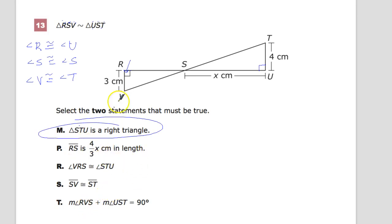Can we know that RS, so this distance here, is 4/3 X centimeters in length? We don't know yet. So let's create our proportion, RV and TU. So I can say RV, TU.